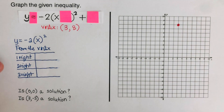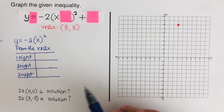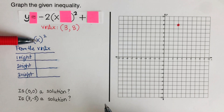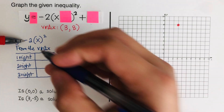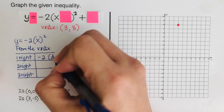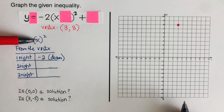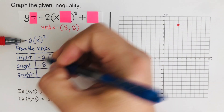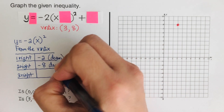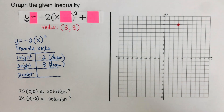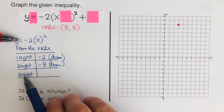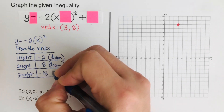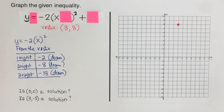We fill in the table using y = −2x². For 1: 1² = 1, times −2 = −2, so we go down. For 2: 2² = 4, times −2 = −8, so we go down. For 3: 3² = 9, times −2 = −18, so we go down again.